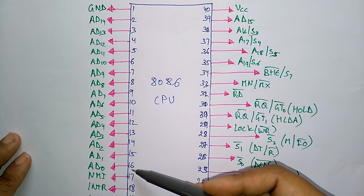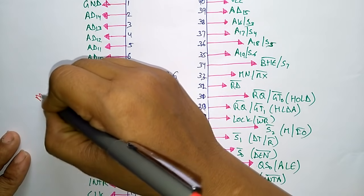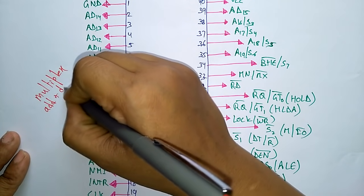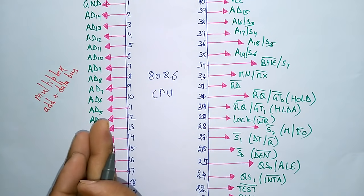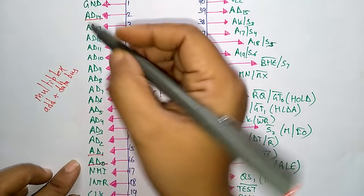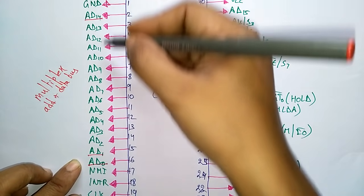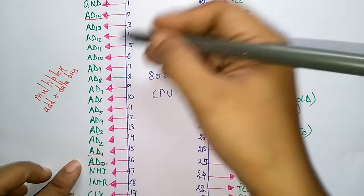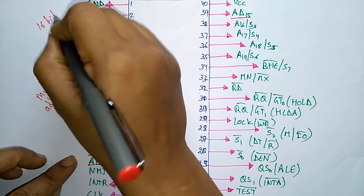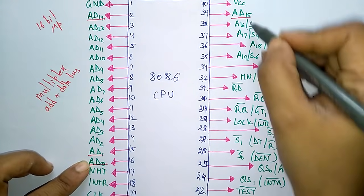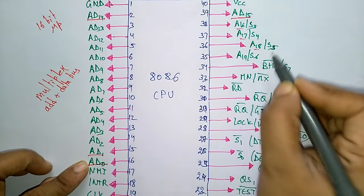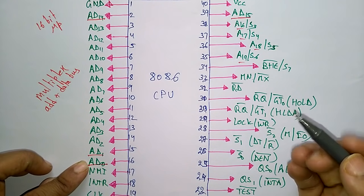From pin 2 to pin 16 we have the multiplexed address and data bus, called the multiplexed AD bus. Because 8086 is a 16-bit microprocessor, the lines are AD0 to AD15 — these are multiplexed address and data lines.